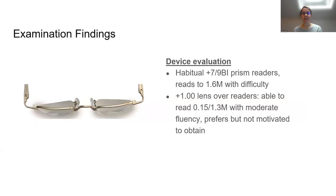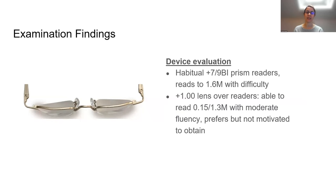We evaluated devices starting with her existing plus 7 with 9 base-in prism readers. With this device she reached a 1.6M threshold, and with one additional diopter over it, she reached 1.3M — a little bit improved with a slightly stronger reading glass, though still not quite reaching 1M newspaper-sized print. Our patient was not motivated to obtain these prism readers at this visit and wanted to forego further device evaluation because she was concerned about her subjective worsening of visual field.